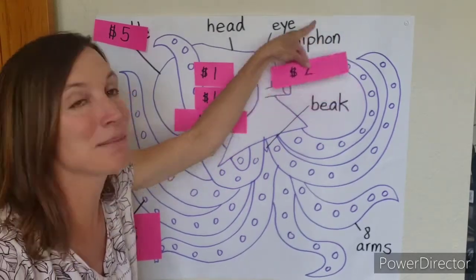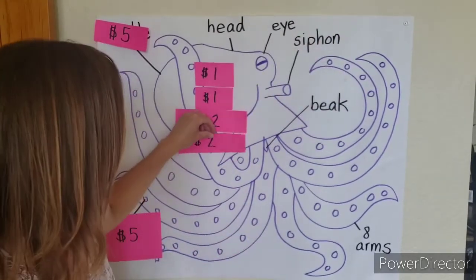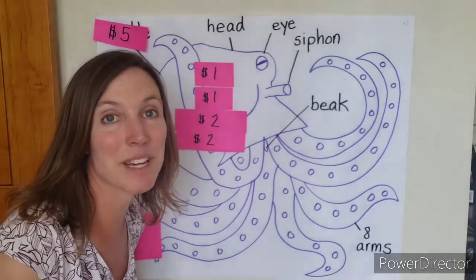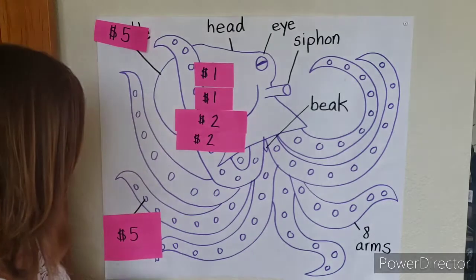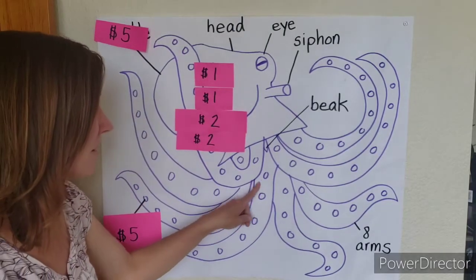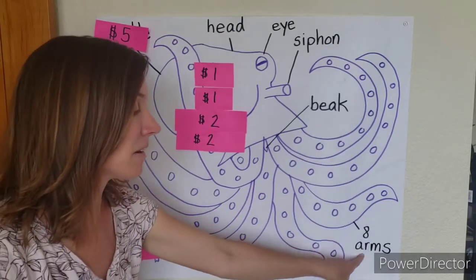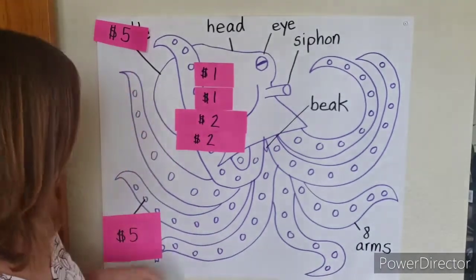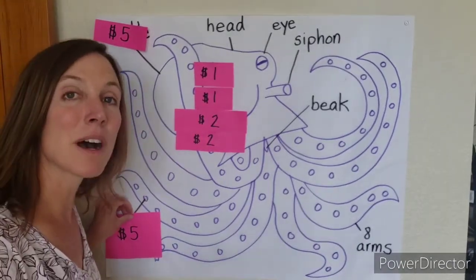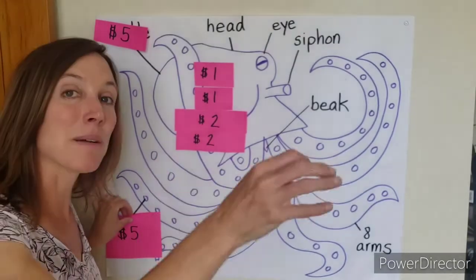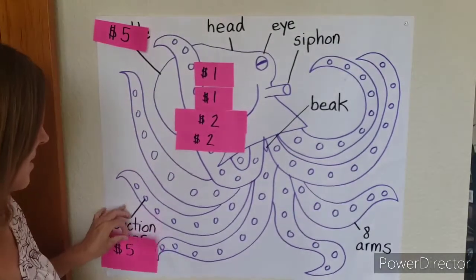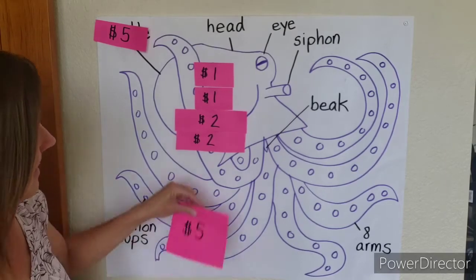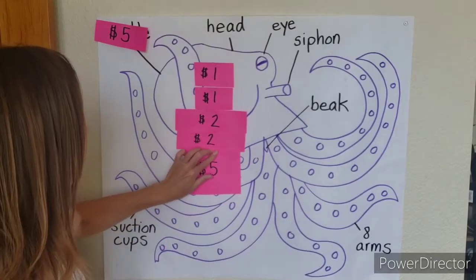Remember, 'ph' makes the 'f' sound: the siphon. Now the last two ones are five dollar questions. What are these called? It's on the underside of the octopus's eight arms or tentacles, and it helps it grip to things like rocks or helps it grab food. These are called the suction cups.